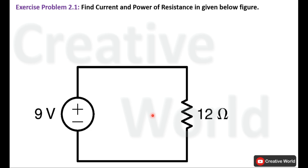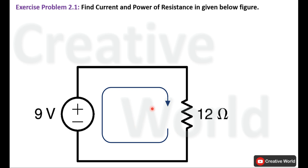First, we will assume the direction of current inside this closed loop. We have taken the direction of current clockwise — you may take counterclockwise as well. The current entering terminal on the resistance is taken with positive sign and current leaving terminal is taken with negative sign. We have assigned the polarity notation of voltage across this 12 ohm resistance.